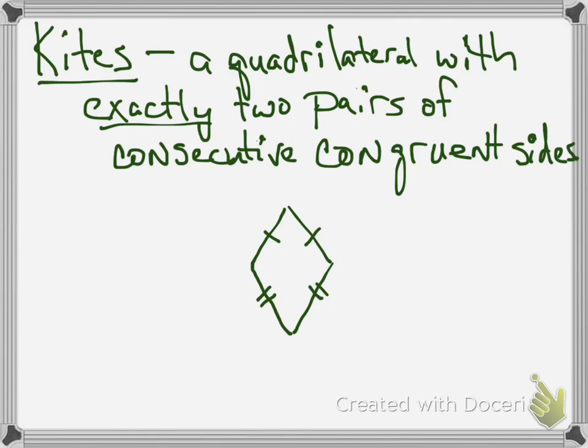let's talk about a kite. What is a kite? A kite is a quadrilateral with exactly two pairs of consecutive congruent sides. So here, it's not that the opposite sides are congruent. It's the ones that are next to each other.